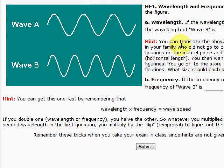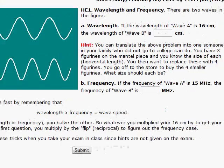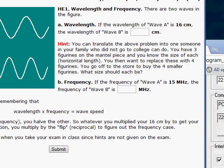Now, the hint here says, translate this problem into one that someone in your family can do who did not go to college. For example, you have three figurines on the mantelpiece, and you know the size of each one, the horizontal length of each of those three. They're the same.